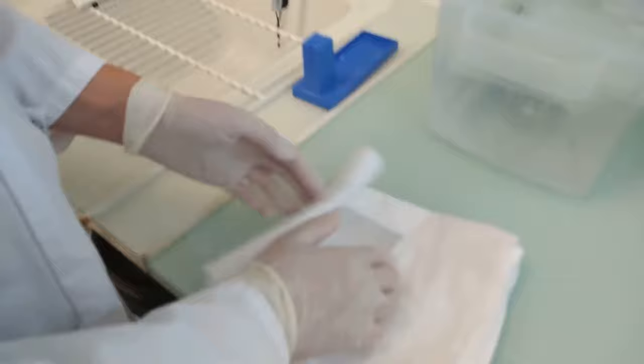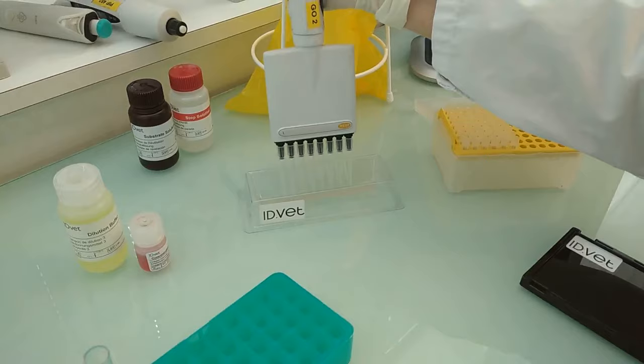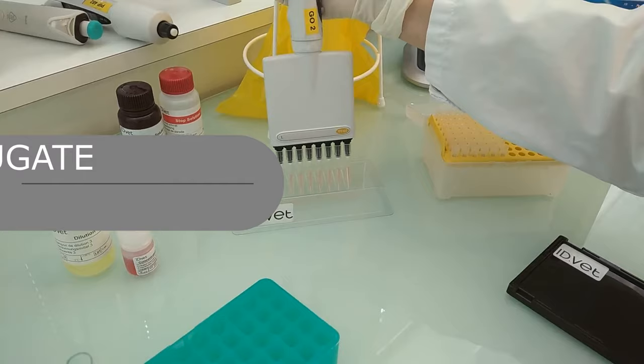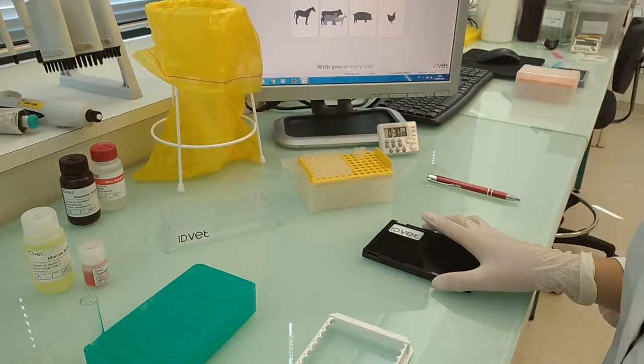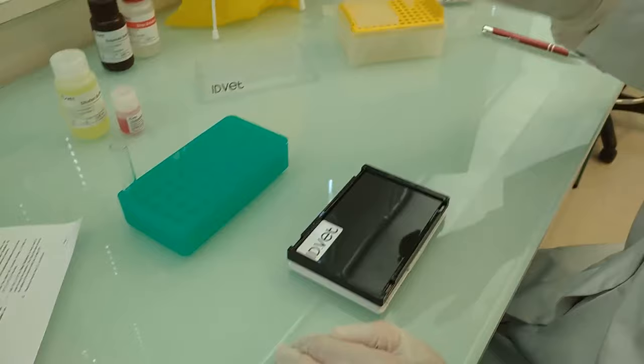Before adding the conjugate, the wells should be completely dried. Conjugate step: Add 100 microliters of the conjugate 1X to each well. Cover the plate and incubate 30 minutes at 21 degrees.